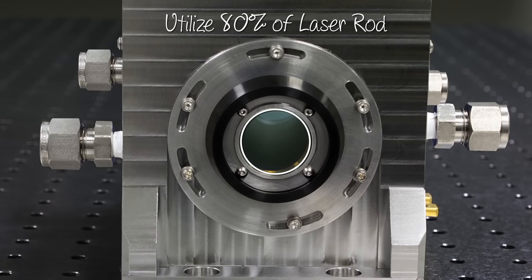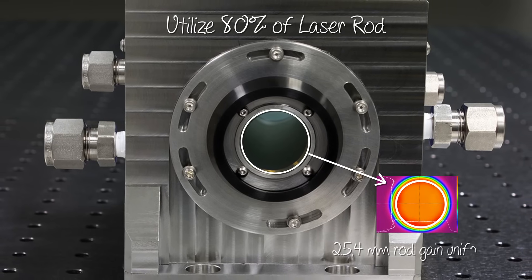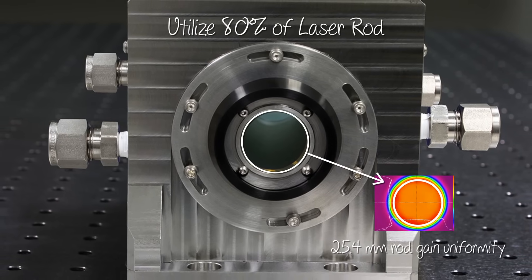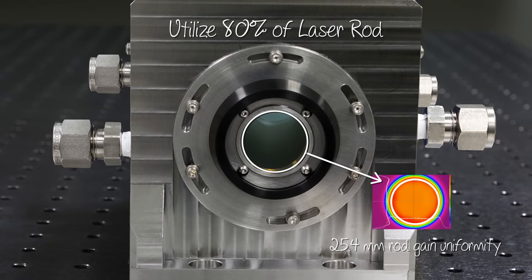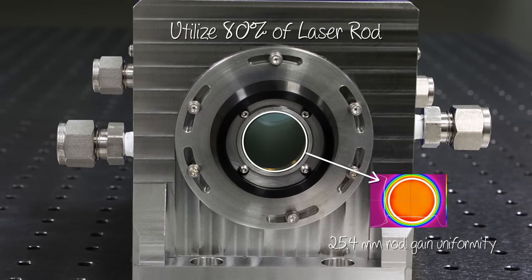By using only the inner 80% of each laser rod, each amplifier stage minimizes beam aliasing, beam clipping, and maximizes gain uniformity.